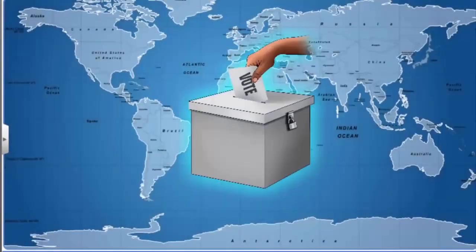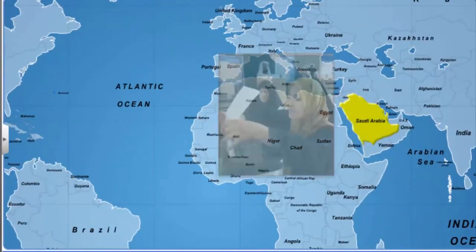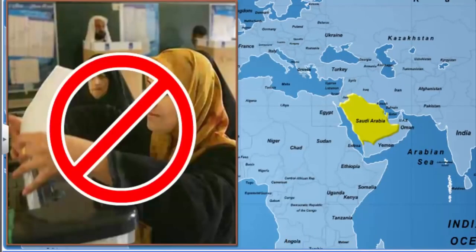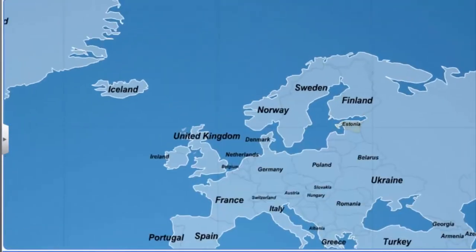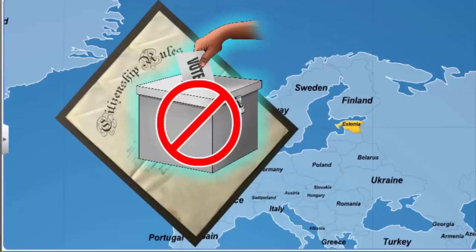Even today, there are many places where the equal right to vote is denied. The first example is Saudi Arabia, where women are not allowed to vote. Another example is Estonia, where the citizenship rules make it difficult for people belonging to the Russian minority to gain the right to vote.